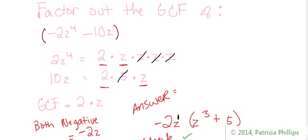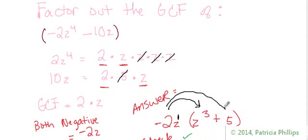At the bottom where it says 'check,' that's what it means: when you think you have the right information on the inside of the brackets, always distribute that greatest common factor to all the terms on the inside to make sure you've done it correctly. And that's about it. I'm going to put up another video with a couple more, more complicated examples, so stay tuned for the next video. Thanks for watching.